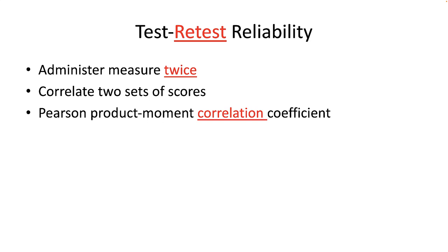Factors that may affect test-retest reliability include memory and learning. Use test-retest reliability when the length of time between two administrations is long enough to offset memory or practice effects, when you have little reason to believe memory will affect responses, and when nothing has occurred between administrations that will affect responses. You can also use it when information is available on only a single-item measure.